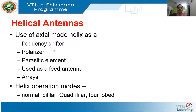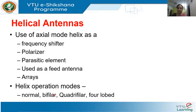Apart from being used as a basic transmitter and receiver, helical antennas also find use as a frequency shifter and a polarizer. It can be a parasitic element, used as a feed antenna, or as an element in array antennas. It has different operation modes such as normal mode, bifillar mode, quadrifillar — four loop. Fillar implies wire, so monofillar means one wire, bifillar two wires, quadrifillar four wires, and so on.